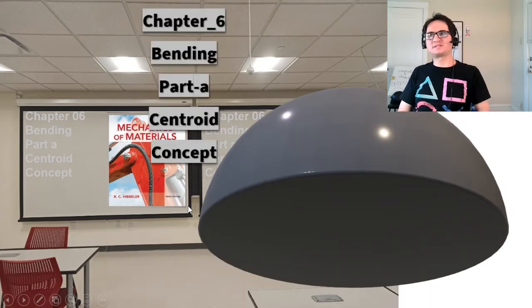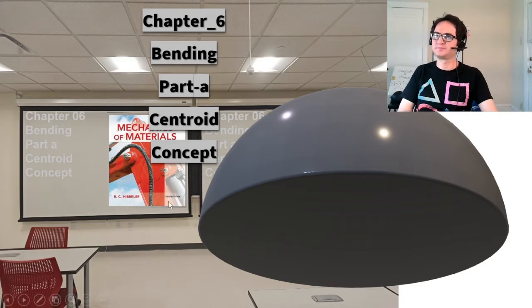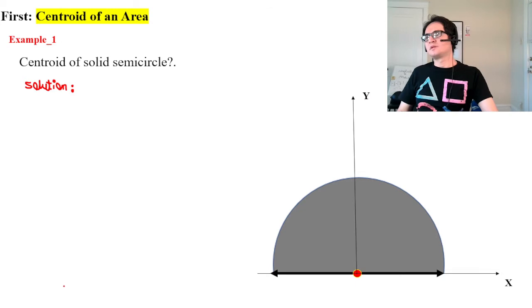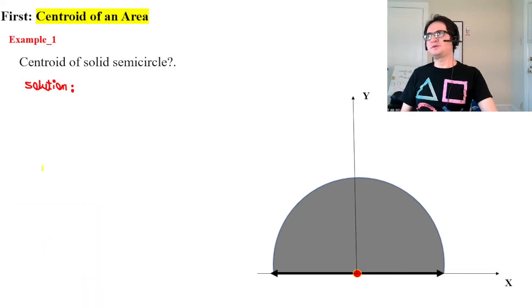Chapter 6 Bending, Part A: Centroid Concept. We want to calculate the centroid of a semicircle.